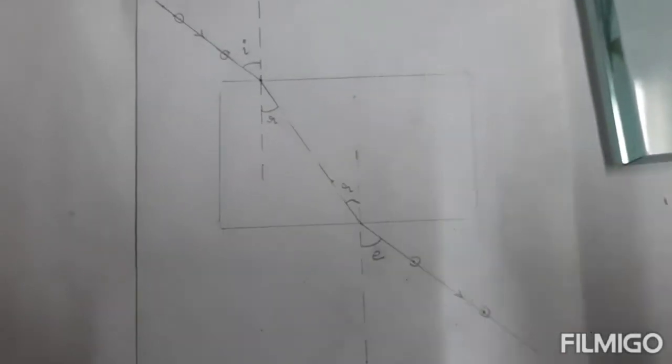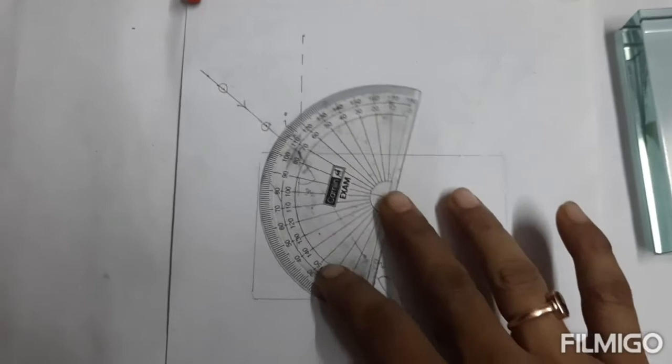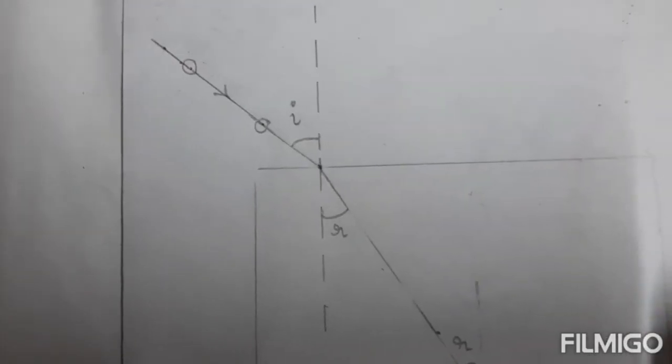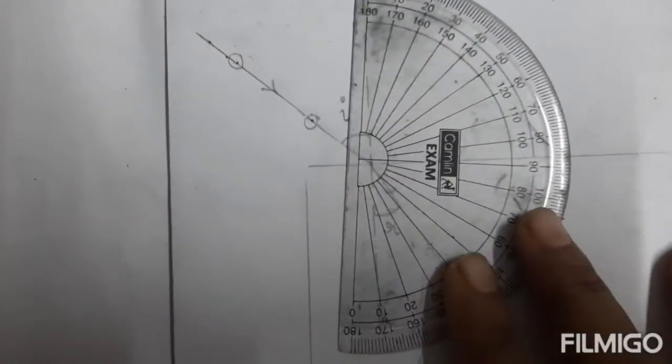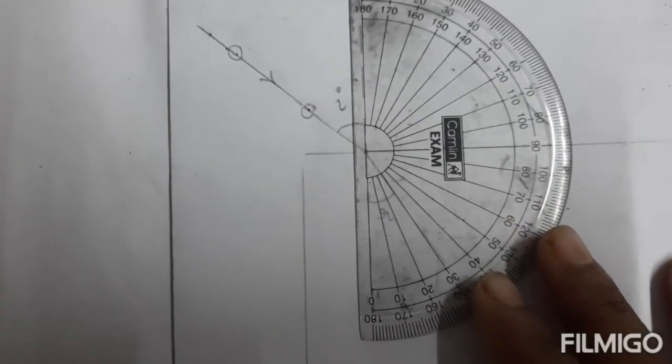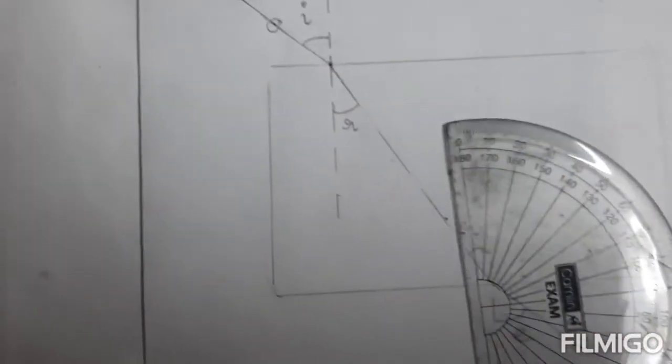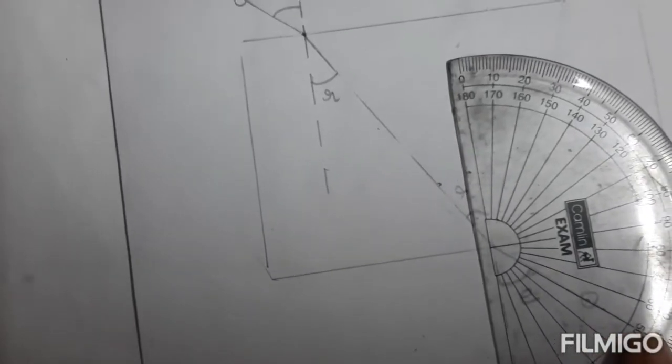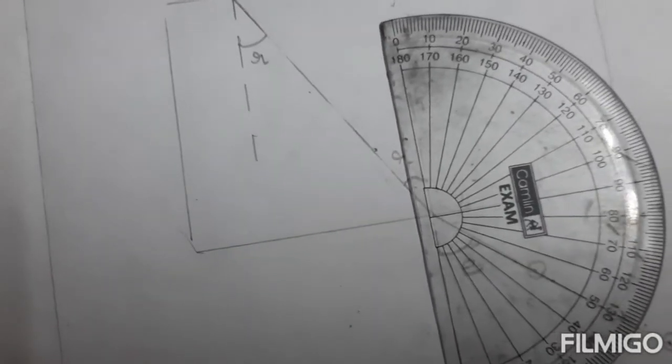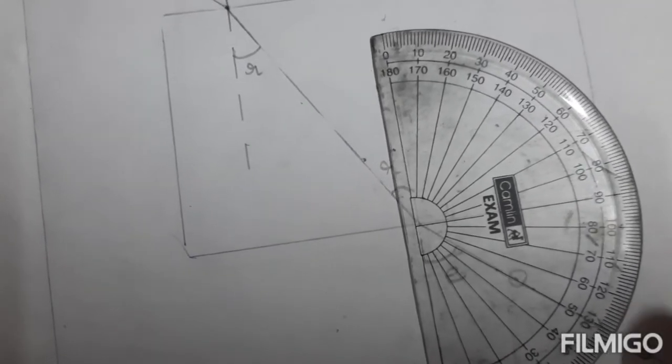Now we are going to find out the angle of incidence, angle of refraction with the help of a protractor. Angle I is 50 degree. Now we measure angle R, which is 31 degree. Now we measure angle E, which is again 50 degree.